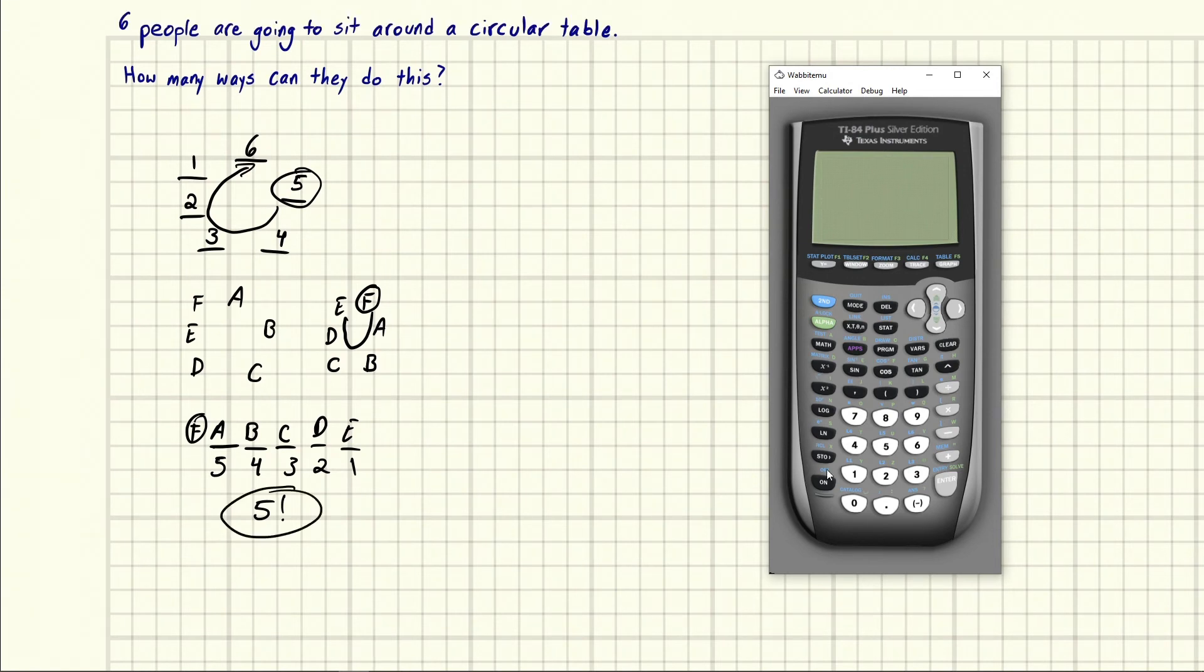If we were to come in and do this on a calculator, we do five and we'd come in and choose probability, hit the math key probability, and then go to four. So there's 120 ways.